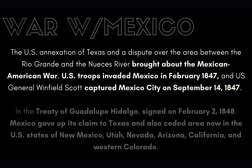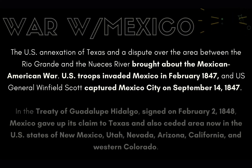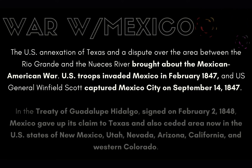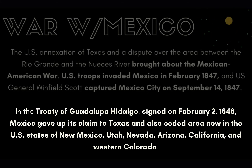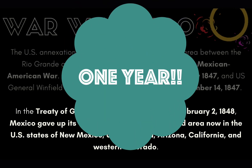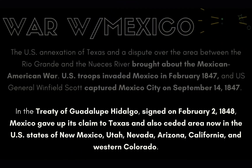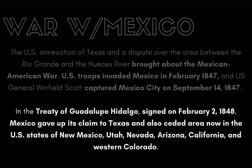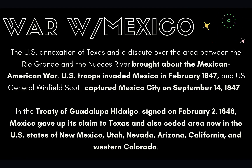What followed was war with Mexico. The US annexation of Texas and the dispute over the area between the Rio Grande and the Nueces River brought about the Mexican-American War. US troops invaded Mexico in February 1847, and General Winfield Scott captured Mexico City on September 14th, 1847. In the Treaty of Guadalupe Hidalgo, signed February 2nd, 1848, Mexico gave up its claim to Texas and also ceded the areas now known as New Mexico, Utah, Nevada, Arizona, California, and western Colorado — effectively losing about 50 percent of its original land.